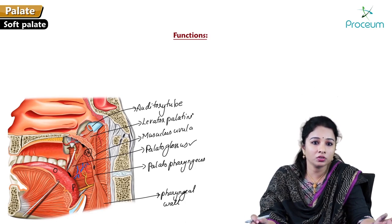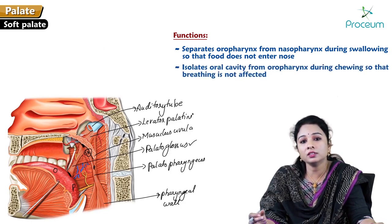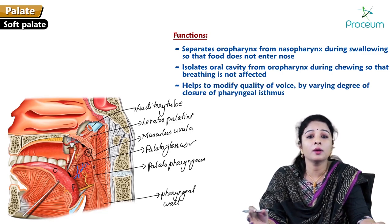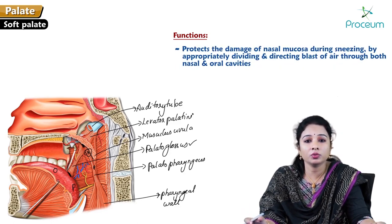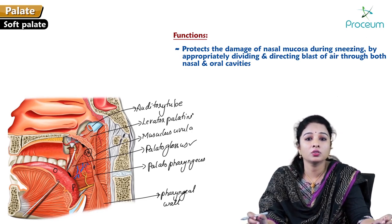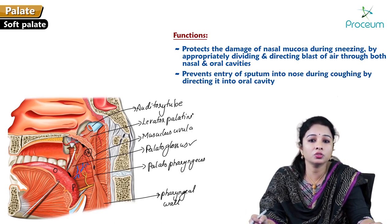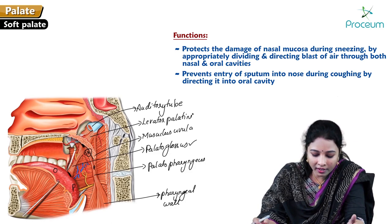The functions of the soft palate include: separating the oropharynx from the nasopharynx during swallowing so food does not enter the nose; isolating the oral cavity from the oropharynx during chewing so breathing is not affected; modifying voice quality by varying the degree of closure of the pharyngeal isthmus; protecting the nasal mucosa during sneezing by directing air through both nasal and oral cavities; and preventing sputum from entering the nose during coughing by directing it into the oral cavity.